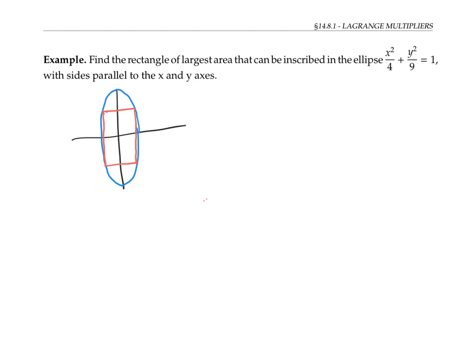As we're considering various inscribed rectangles, a nice way to keep track of which rectangle we're talking about is by specifying the coordinates of the upper right corner, which I'll call coordinates x, y. The area of the rectangle will be the base times the height, so that's two x times two y, or four xy. That's the function I want to maximize: f(x, y) = 4xy.